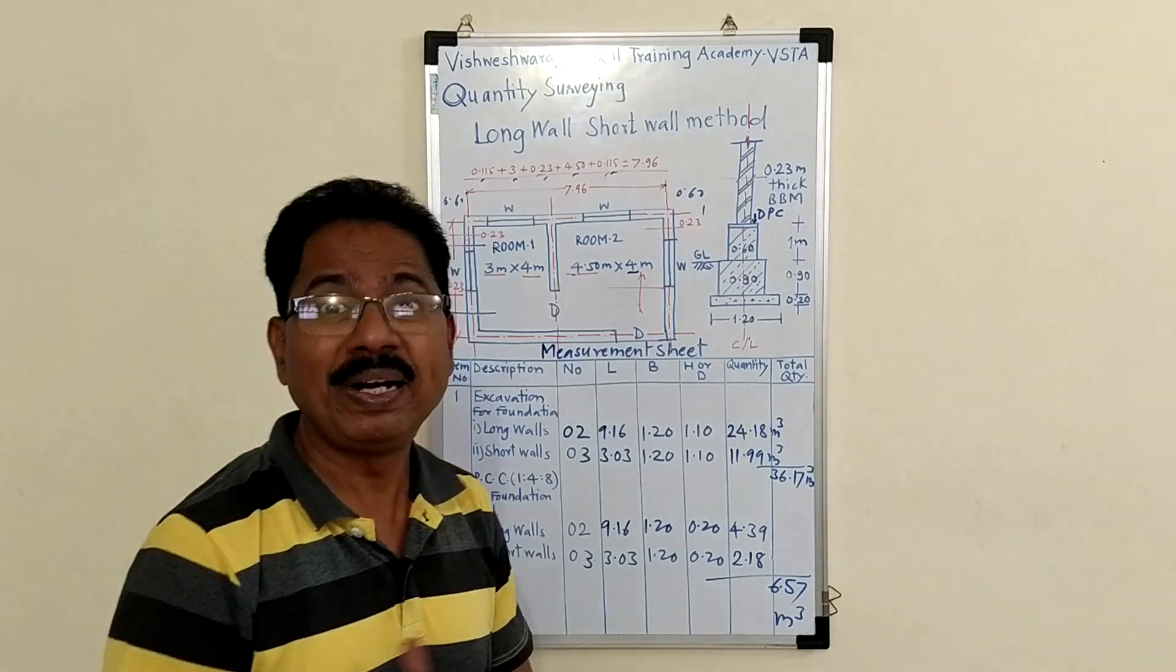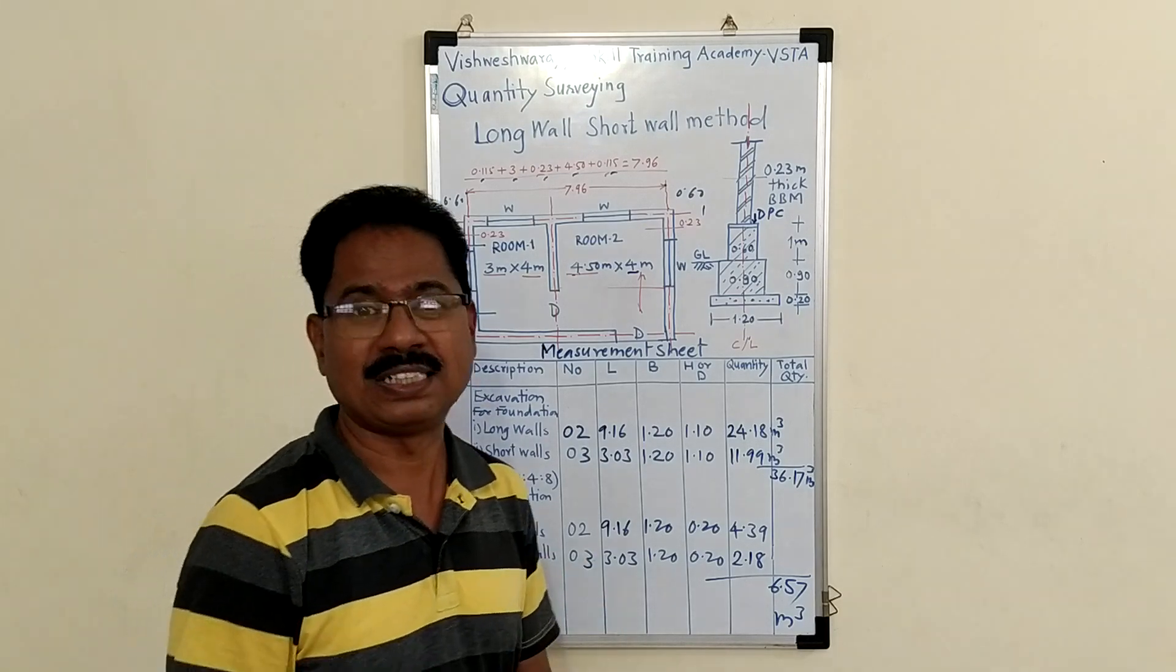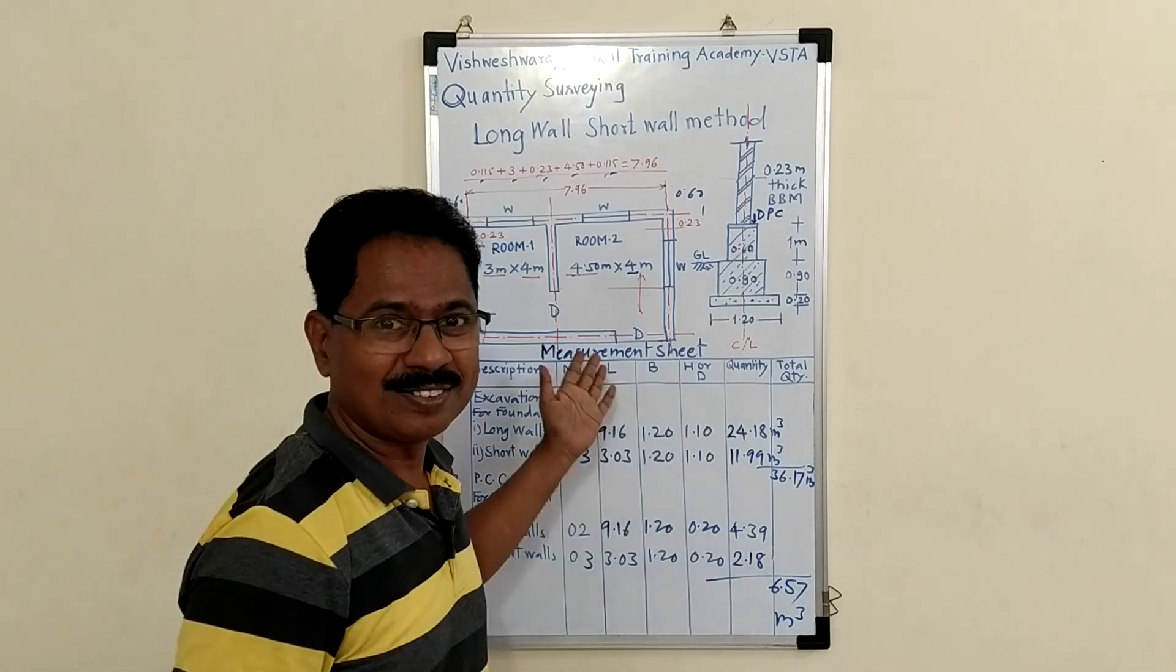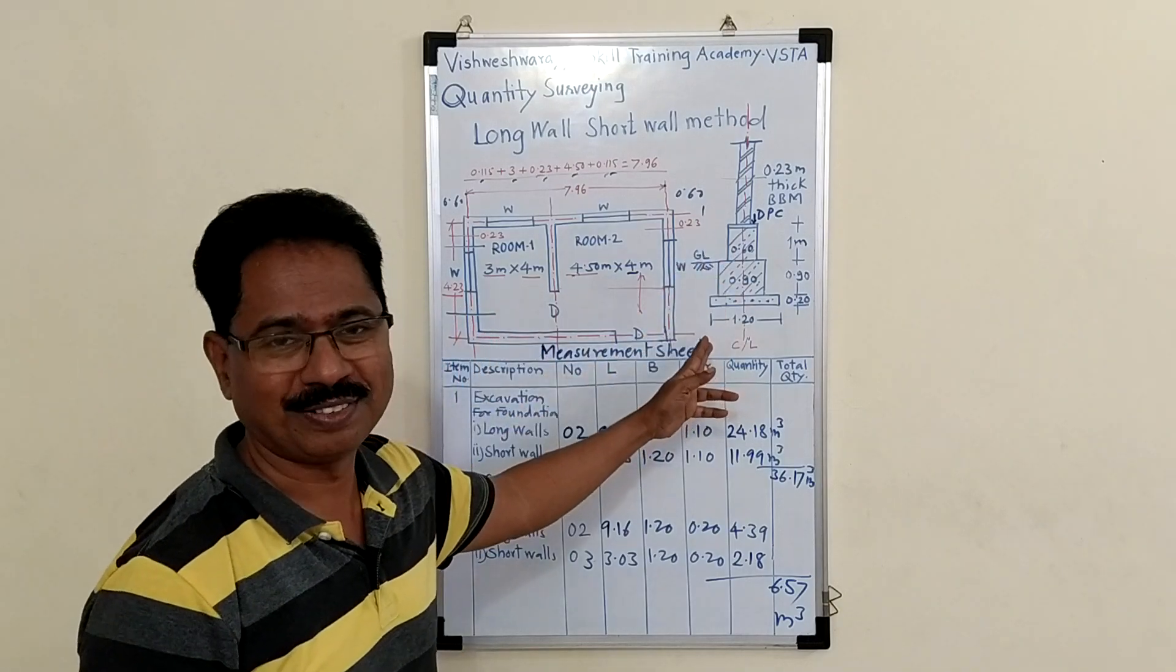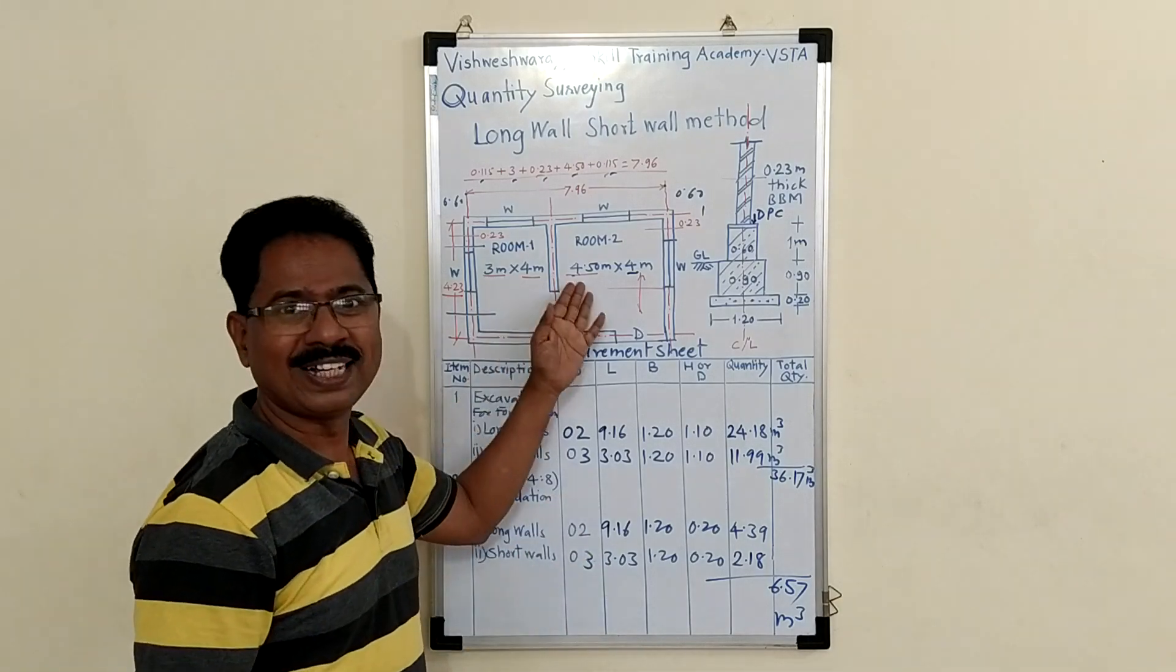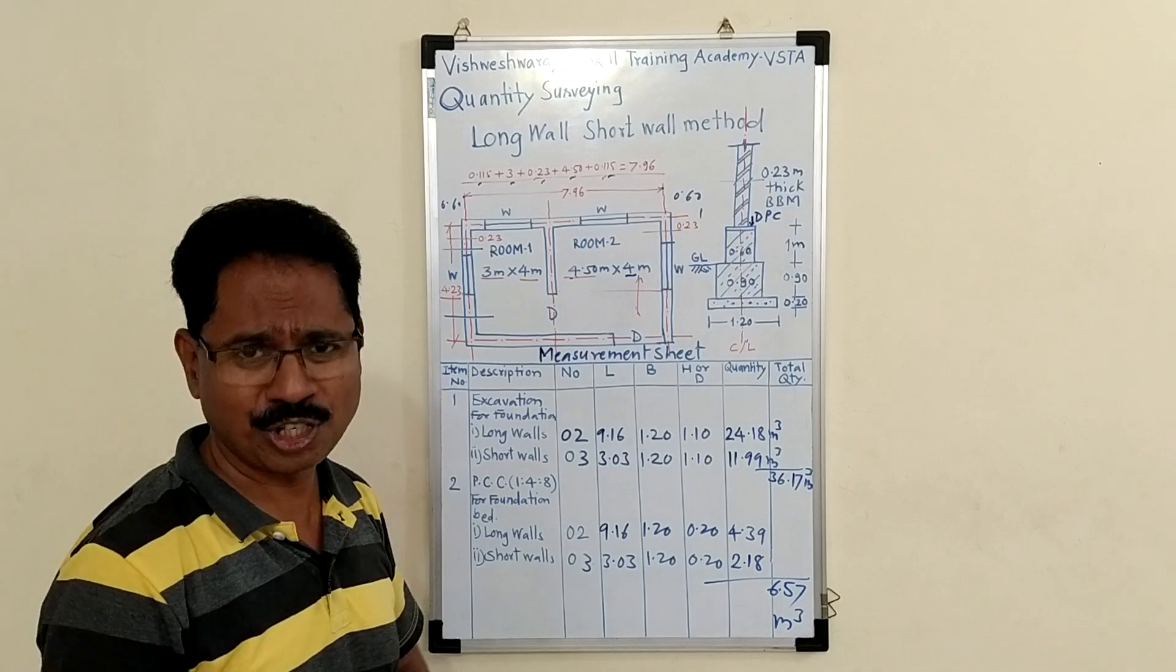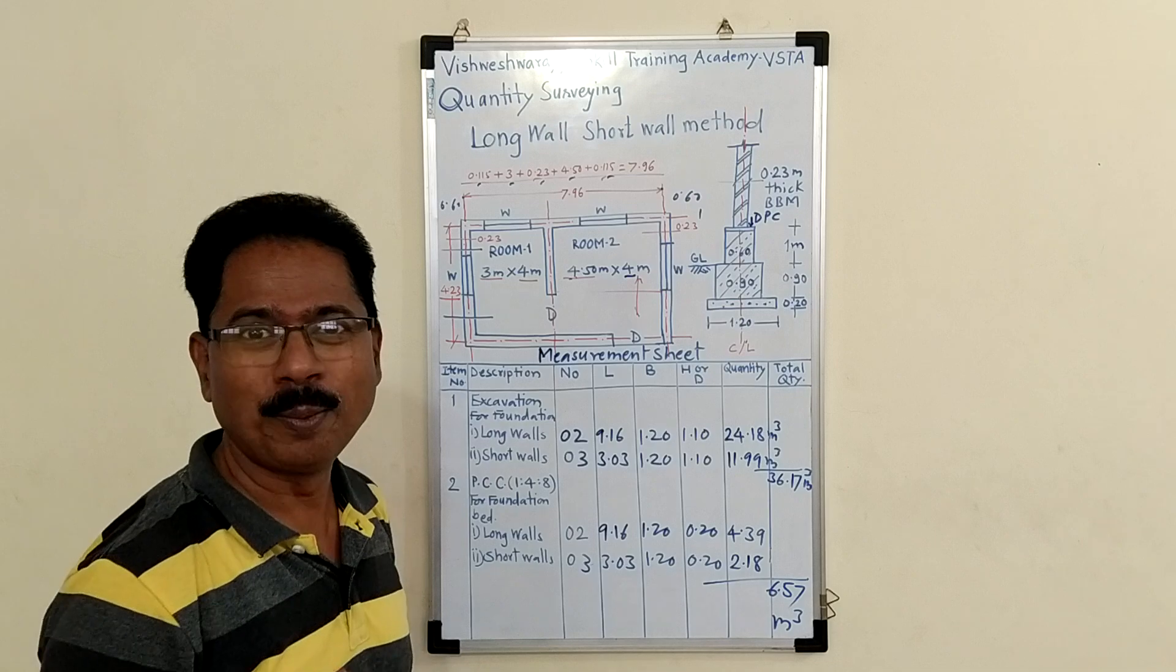You know in estimating and costing first you have to calculate different quantities of items of proposed work. Here you see I draw a plan and typical section of a structure, two room structure, room 1 and room 2. This is a load bearing structure. There are different types of structures. In this session I will explain a two room load bearing structure.